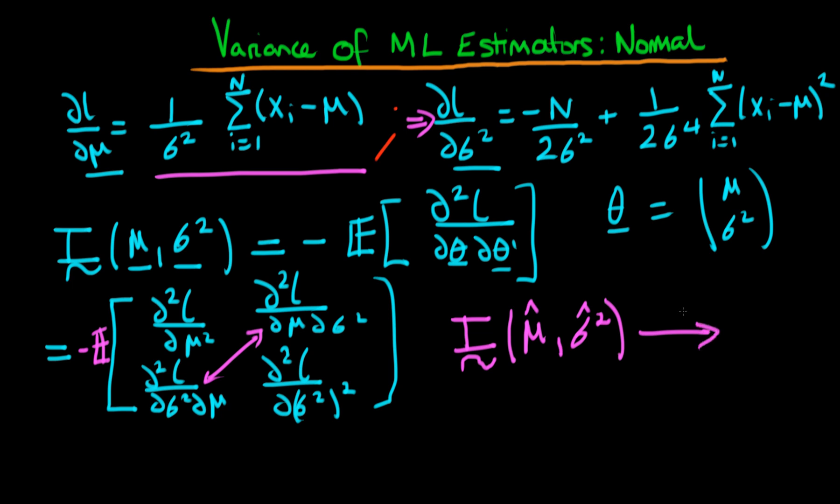Then it turns out that this is itself convergent in probability to the information matrix in the limit that the population size tends to infinity. And that's because both mu hat and sigma squared hat are themselves consistent estimators.